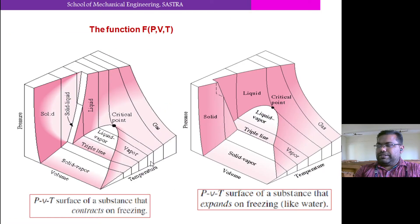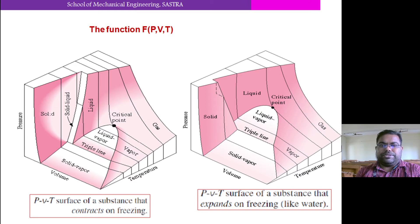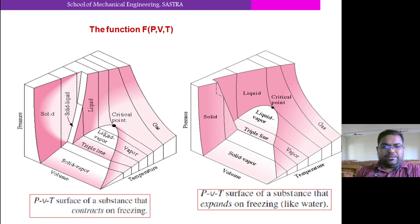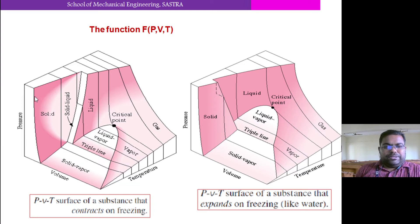If we look at the PVT surface, we know for any pure substance the equation of state is applicable. The equation of state is a functional relationship between pressure, volume, and temperature. So whatever phase change process happens, from solid to vapor, it can be presented over a three-dimensional domain over pressure, volume, and temperature ordinates on a single diagram. The first diagram you are seeing here is the PVT surface for a substance that contracts on freezing. The vertical ordinate is pressure, the horizontal is volume, and perpendicular to that is temperature.